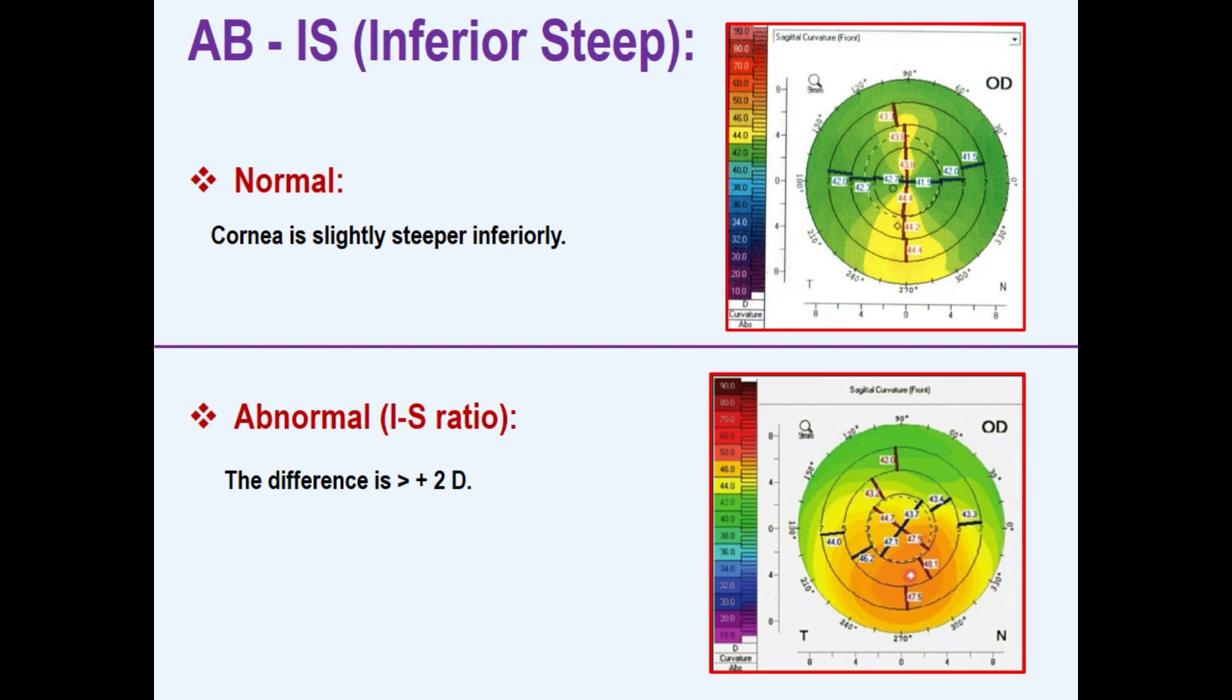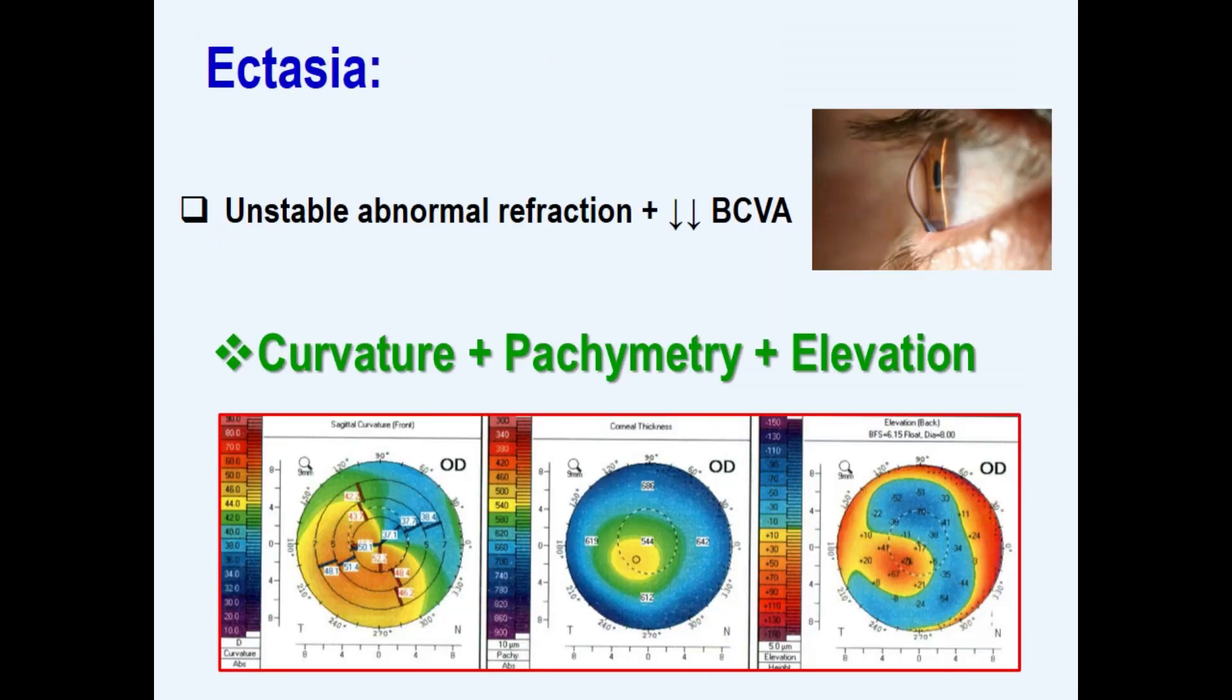In this case, the steep area is located inferior or infra-temporal to the corneal center. Clinically, patients with keratoconus exhibit unstable abnormal refraction and significant decrease in best corrected visual acuity.